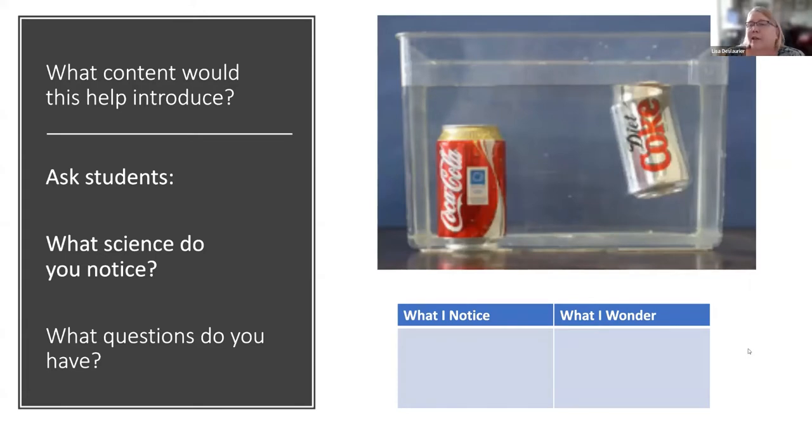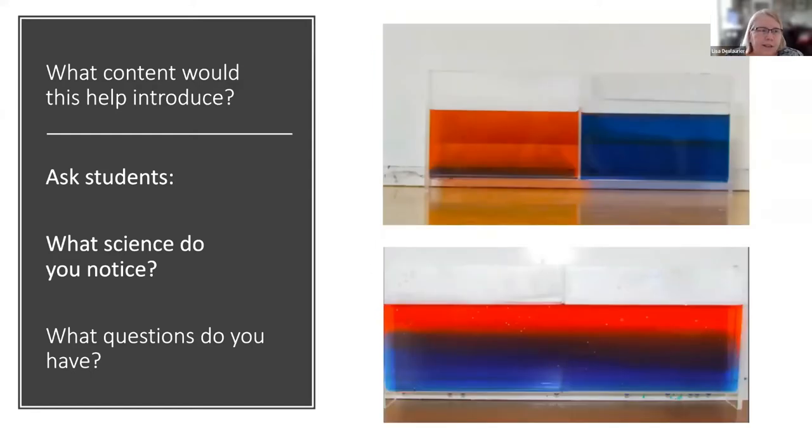Here's another phenomenon that you could use as an example for introducing density. I'm sure we've all done this in the classroom before, but you know that a can of Coke will sink and a can of Diet Coke will float and pictures work just fine. If you don't want to set this up yourself in your classroom. Or here's another one on density. So what's going on here? The top picture actually has a divider that's been pulled out to show the bottom picture.